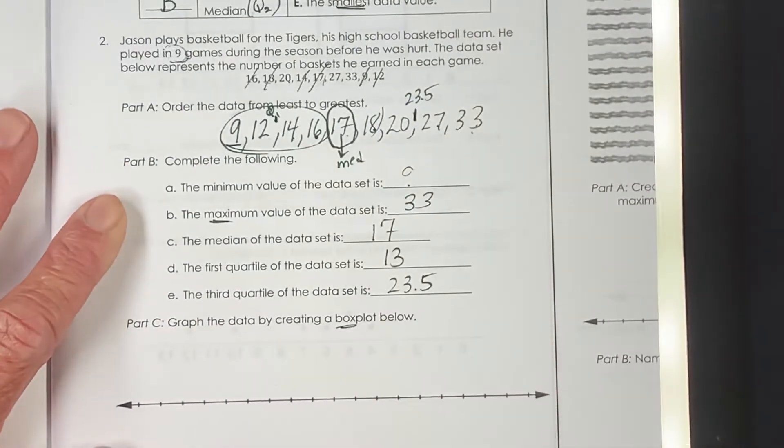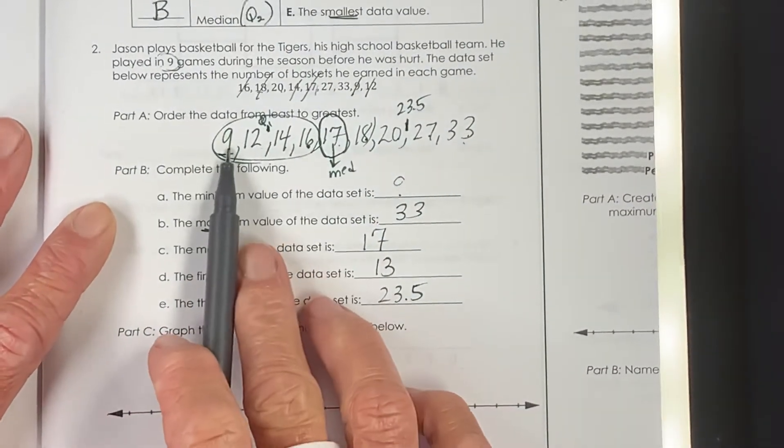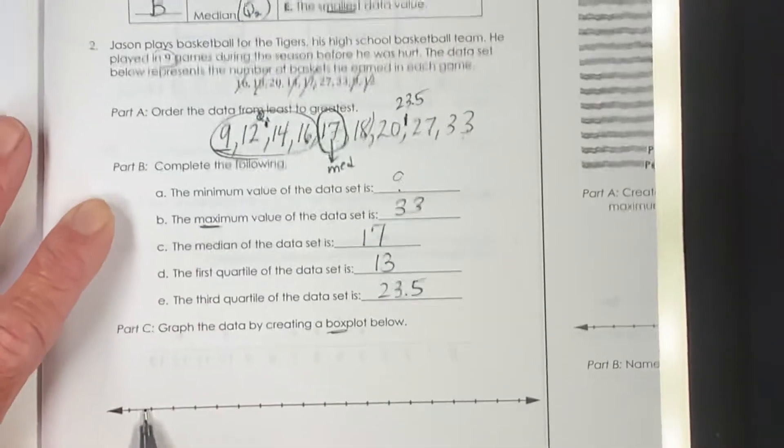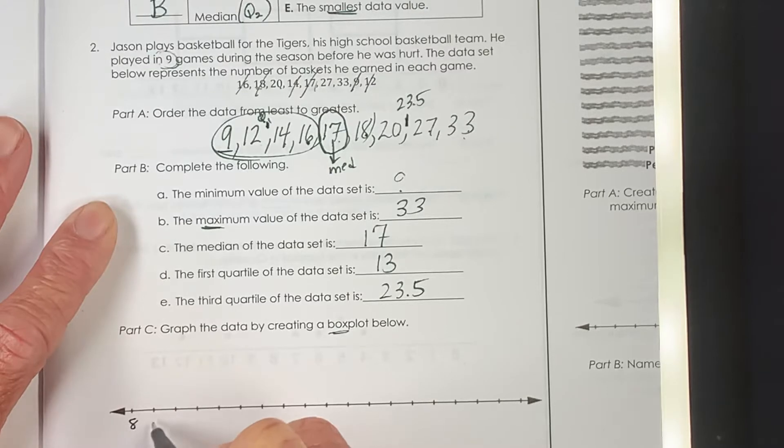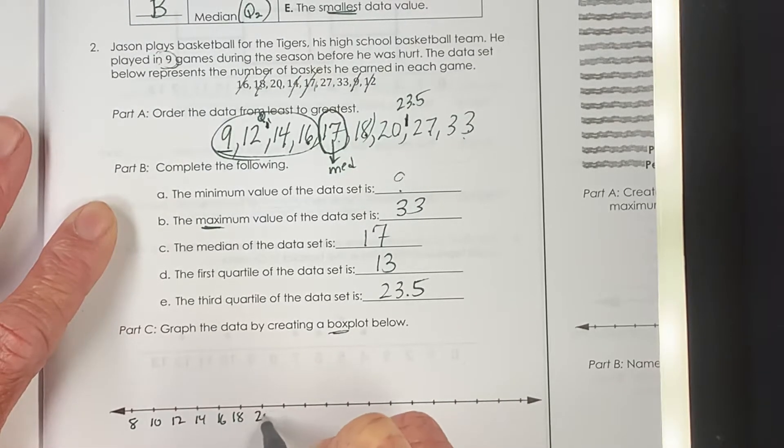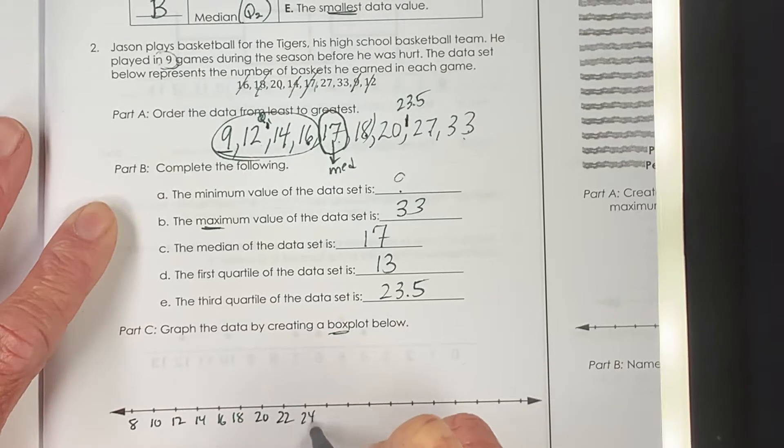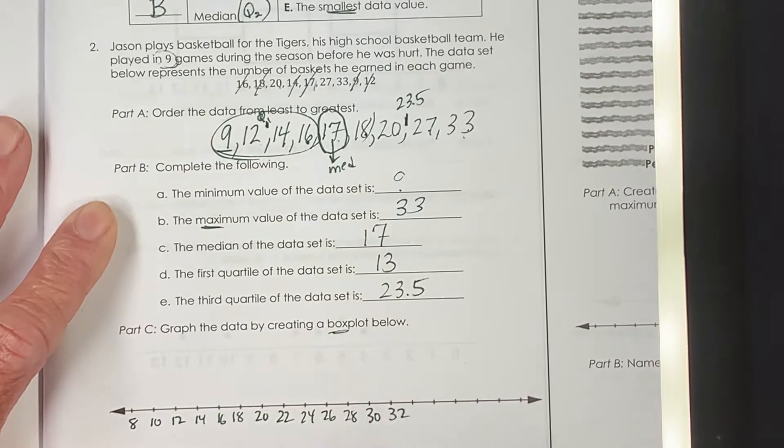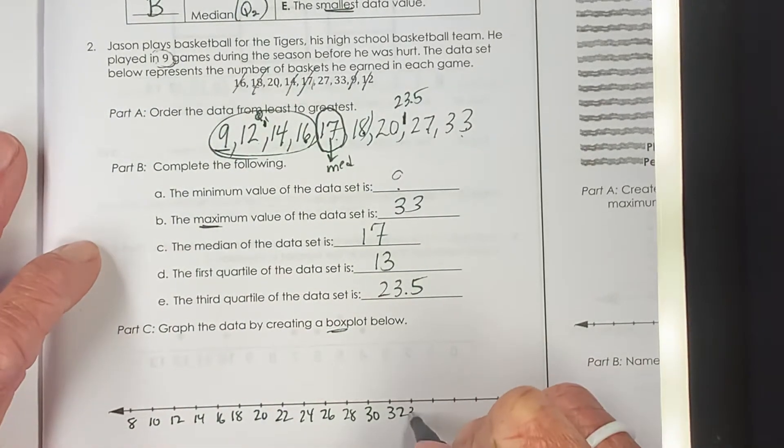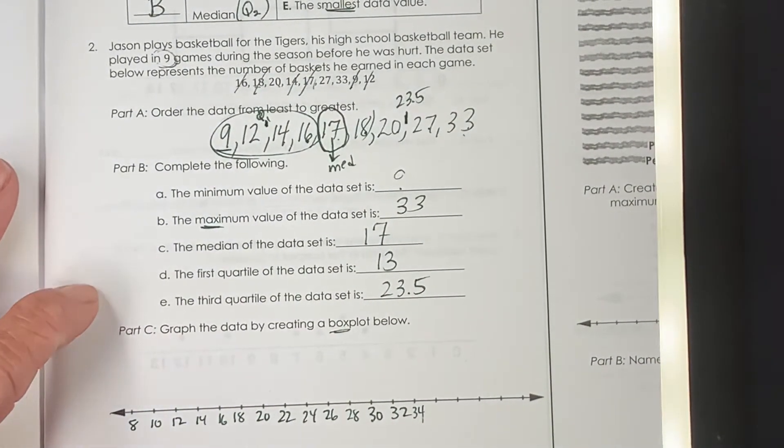Graph the data. Let's make a box plot. We have to go from 9 to 33. I seriously doubt I can count by ones. Let me count by twos. We would not have been able to count by ones. So there's our data.